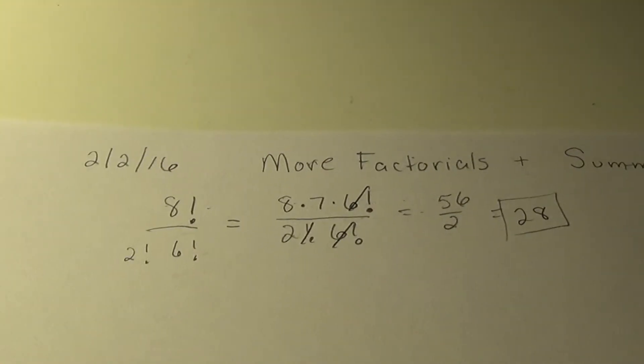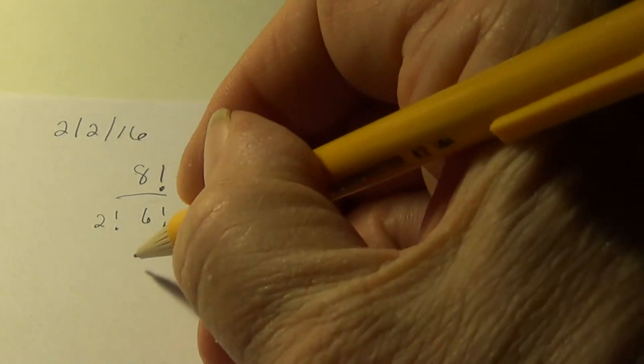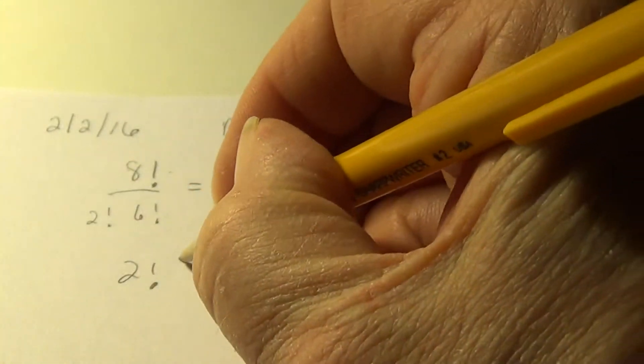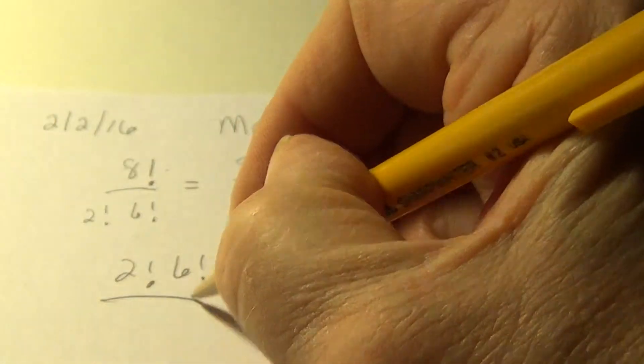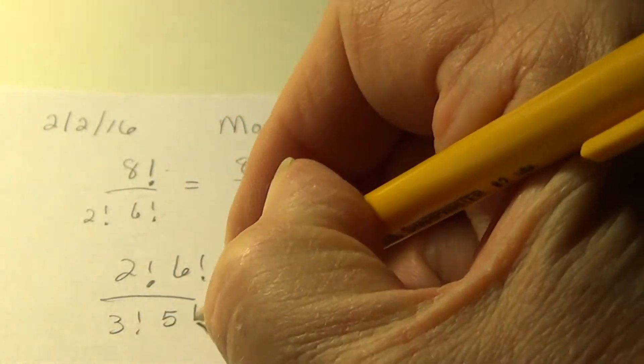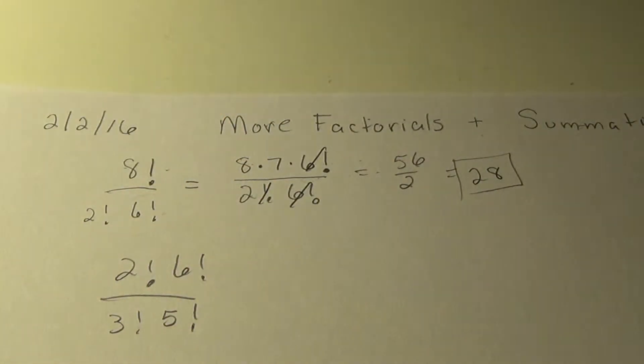So let's see if you can try one. 2 factorial 6 factorial, and on the bottom 3 factorial, and on the bottom 3 factorial 5 factorial. See if you can do a similar thing to what I just did.